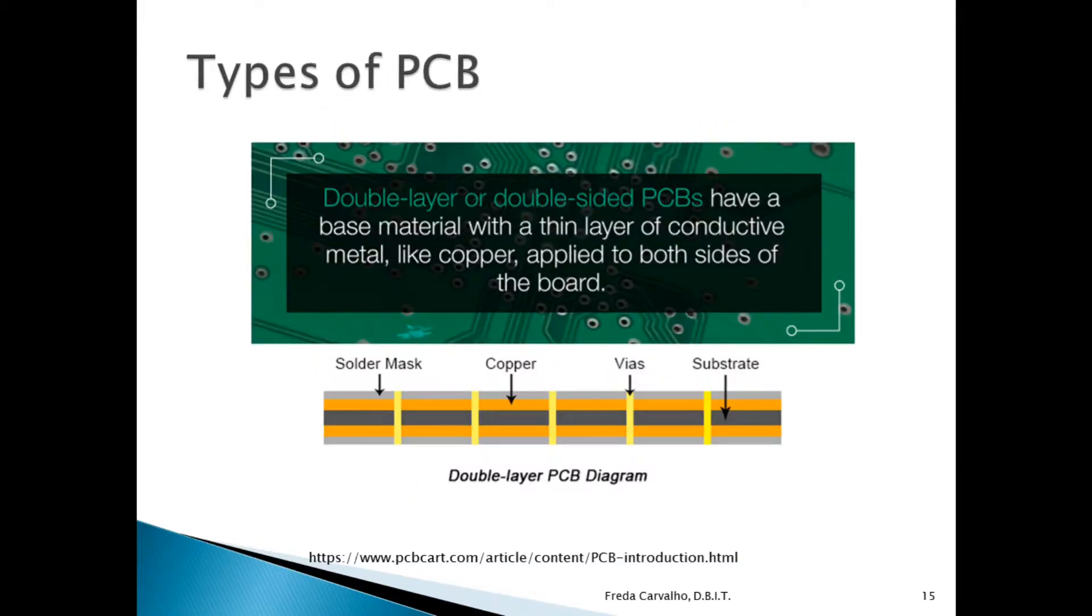Here in this slide you see the types of PCB. This is taken from pcbcart.com. Before you, you can see a double layer PCB diagram. In a double layer or double-sided PCB, it has a base material with a thin layer of conductive metal like copper. Here you can see this orange colored thing which is applied on both sides unlike the single sided which is on one side.